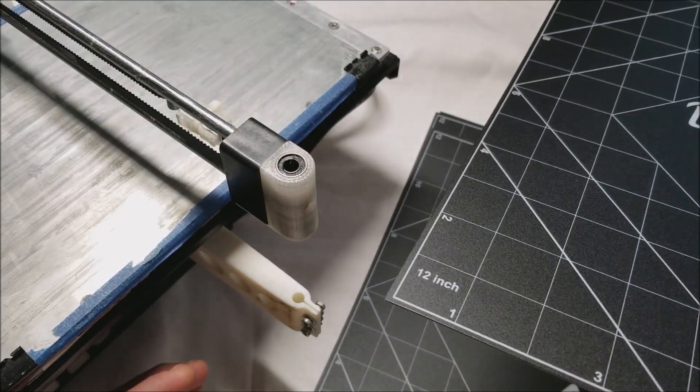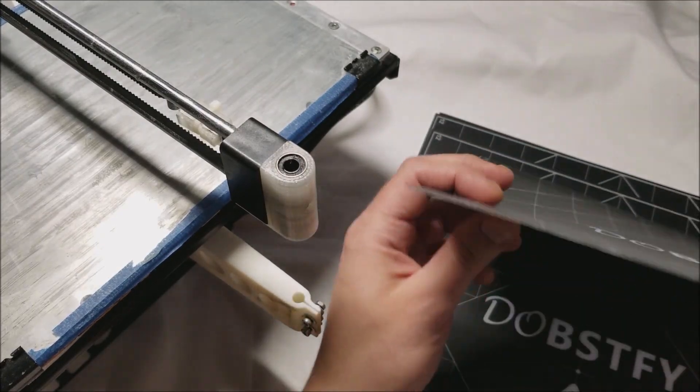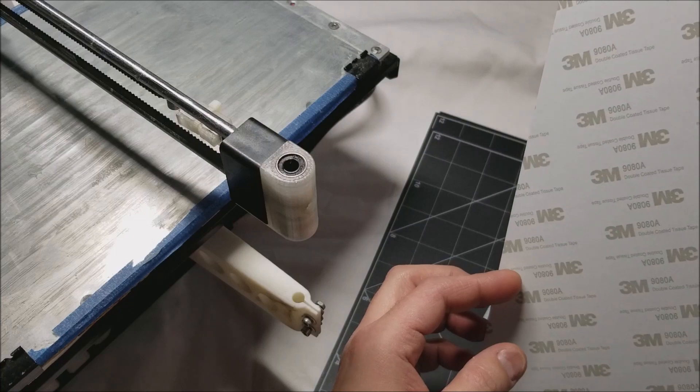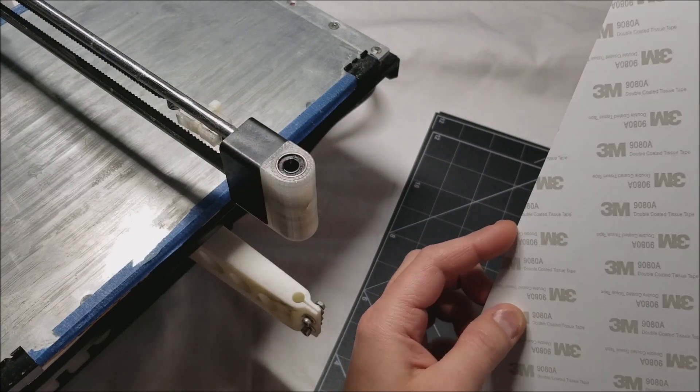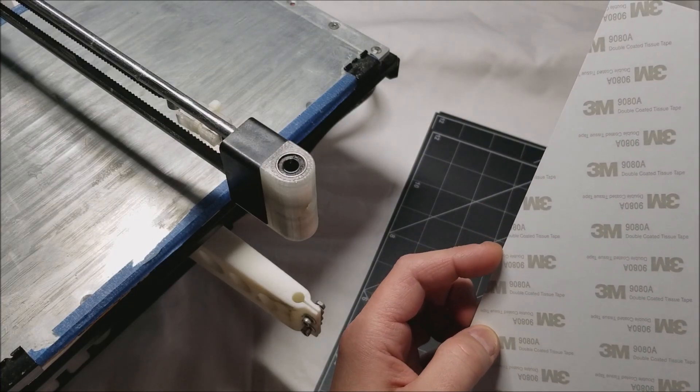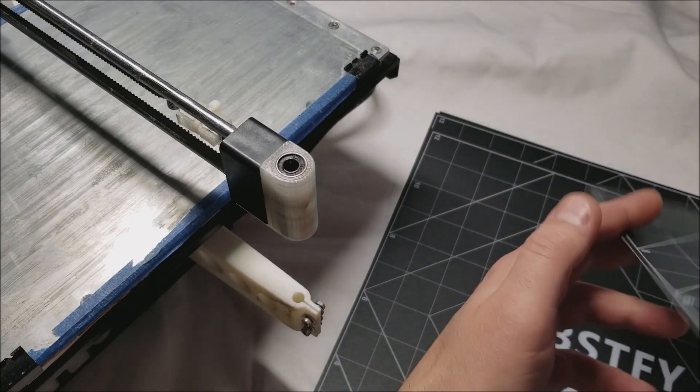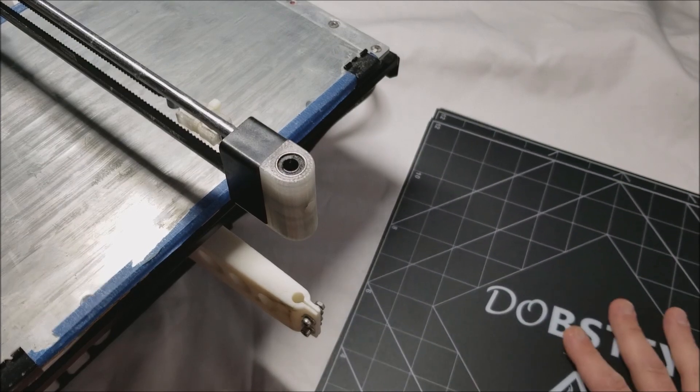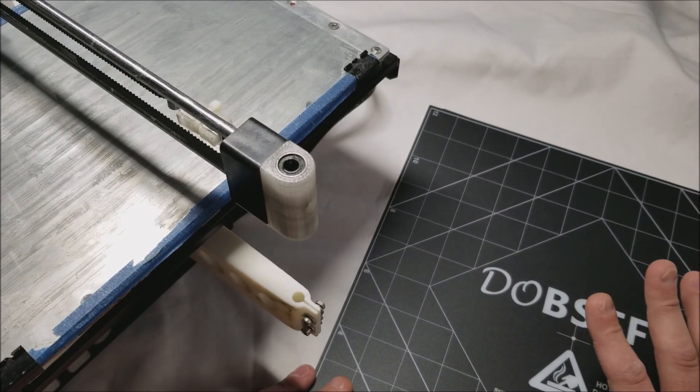It's the 3M double coated tissue tape is what this says. It's a 908 OA is what it says there. Supposedly you can just keep reusing this over and over again. The instructions mention just clean it with alcohol, just isopropyl alcohol, rubbing alcohol, whatever. Just wipe it down and you're set.